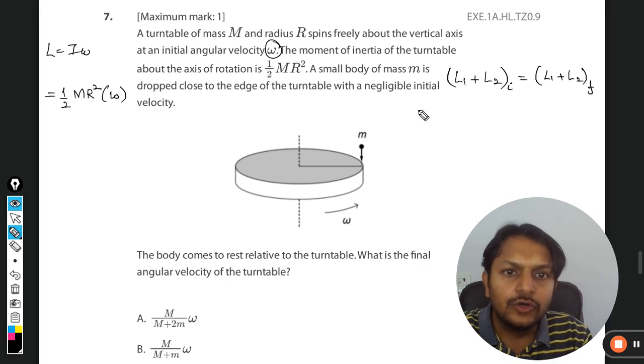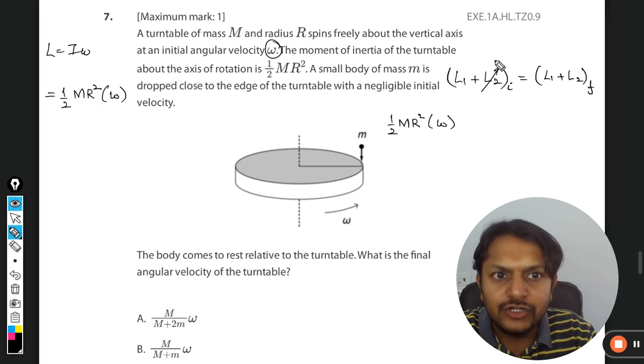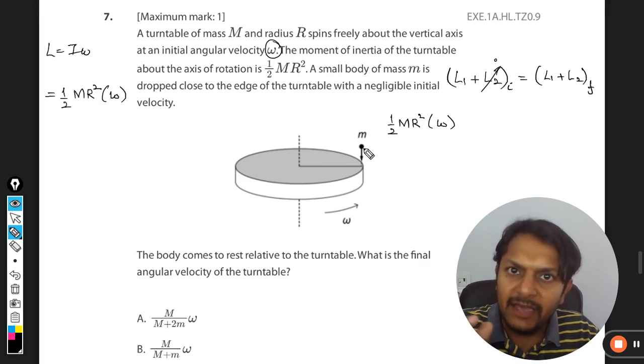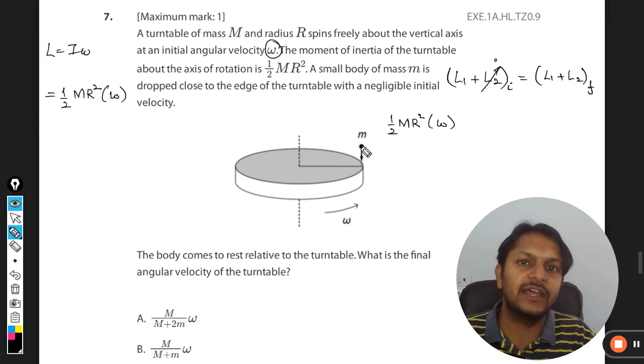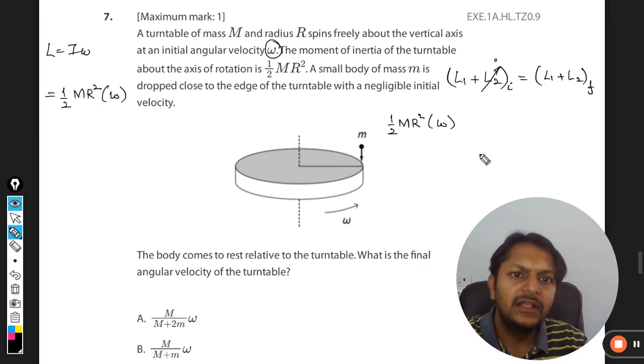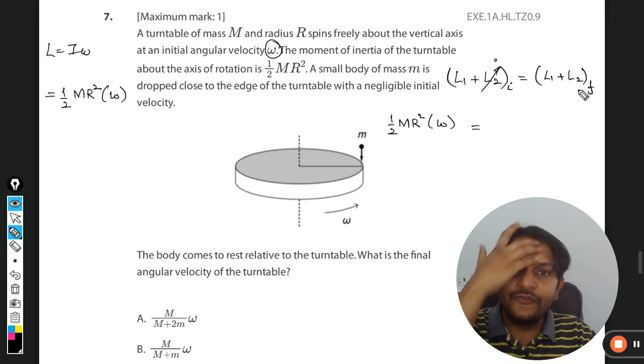So this is given, it is ½MR²ω. And L₂ can be assumed to be zero because this mass m is actually not rotating and there is no motion. It does not have any velocity, so angular momentum will be taken as zero. Now this is equal to L₁ plus L₂ finally.